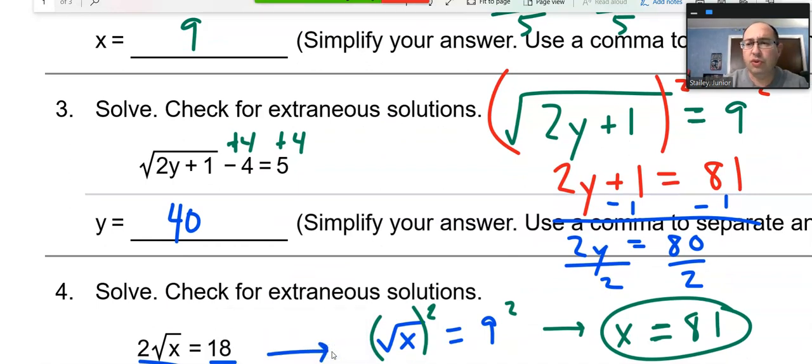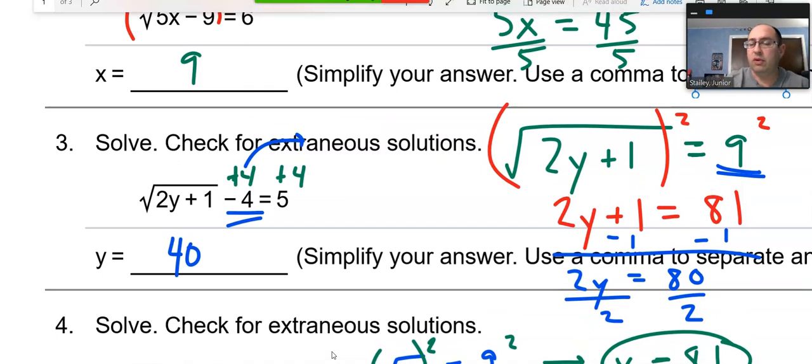So, on question 3 here, we have the radical not by itself. Not by itself at all. So, the first thing I had to do, I saw this right here, and I needed to move it to the other side. And so, we did, and we added it to the other side, and we got 9. And you can see that now the radical was by itself.